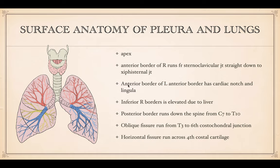Surface anatomy: the apex is the top. The anterior border of the right will run from the sternoclavicular joint straight down to the xiphosternal joint. The anterior border of the left will have the cardiac notch and the lingula, while the inferior border of the right is elevated due to the liver right below it. Posteriorly, the lungs run from C7 down to T10. The oblique fissures run from T3, curving around to the sixth costochondral junction. On the right, the horizontal fissure runs along the fourth costal cartilage.